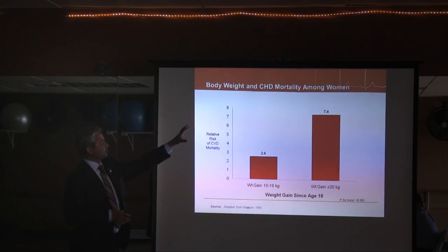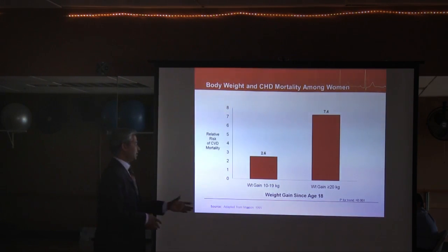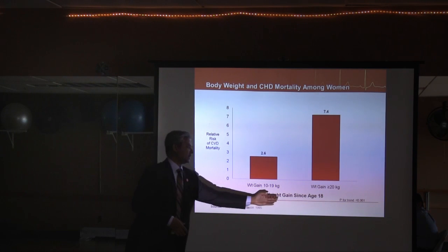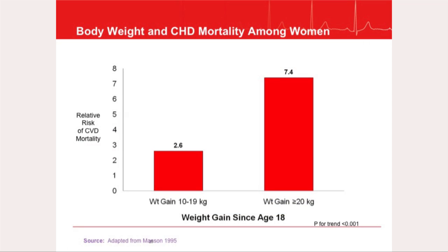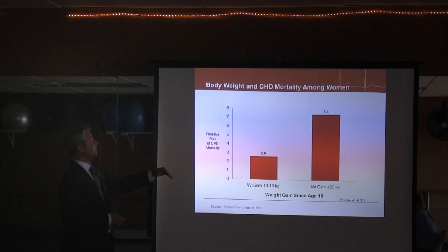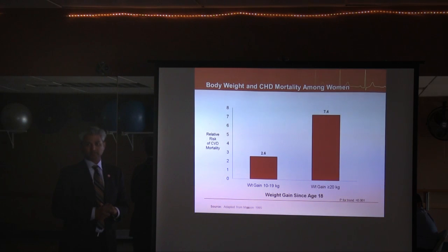For women specifically: women who have gained about 20 pounds since age 18 have a heart disease mortality risk of 2.6 percent. But if you gain more than 20 kilos, your risk is significantly higher.